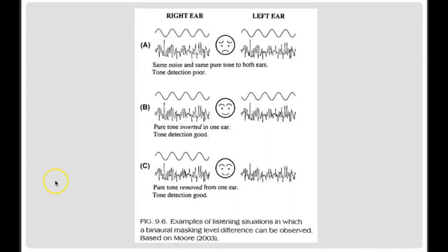Let's go through this. The auditory system likes when things are different between ears. Looking at this visual, in condition A, the right ear has a pure tone and the left ear has a pure tone that's in the same phase — you know it's in the same phase because the starting point is the same — and you have some noise. If you're trying to detect a tone and they're in phase, and the noise is similar, then the auditory system doesn't like that because there's no difference for the superior olivary complex to detect.